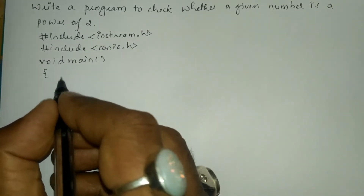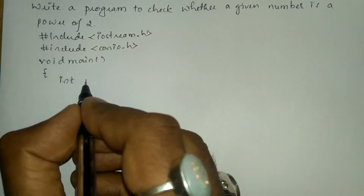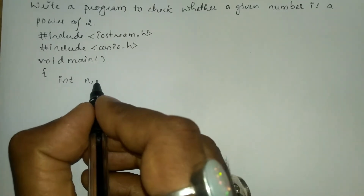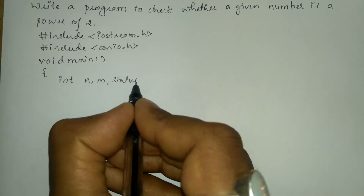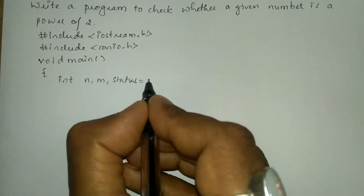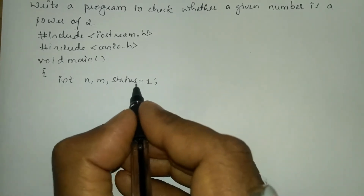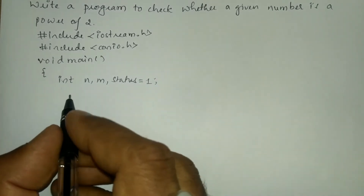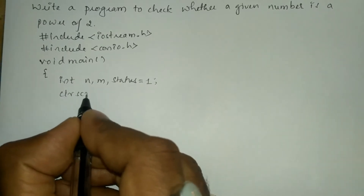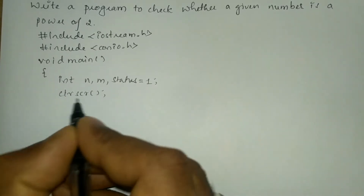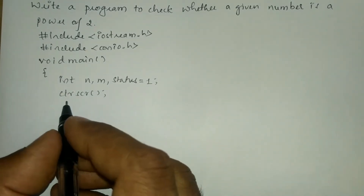Here I will write data type integer n, m, and the next variable is status, which is initialized with value 1. clrscr() is a function which is used to clear the screen.